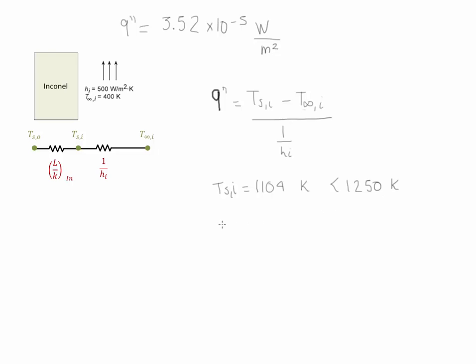If we follow the same process we do the evaluation of the flux between the temperature on the outside of the blade and the cooling air. And now we simply add two of the resistances, L over k of Inconel plus 1 over Hi. If we solve for Tso we see that the value is going to be equal to 1174 Kelvin. This value is still below the maximum allowed value of 1250 K.